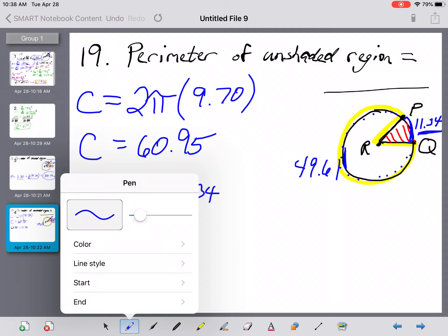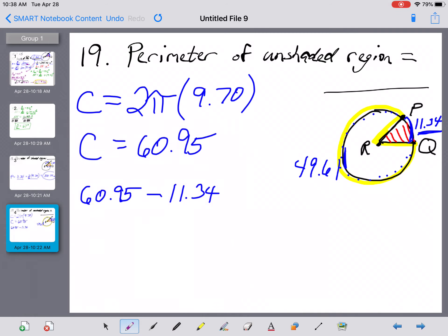Okay, and if we're trying to find perimeter of the unshaded region, that is going to be this radius right here of 9.70, this radius of 9.70, and this arc out here of 49.61.